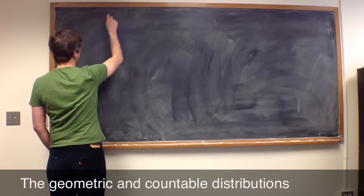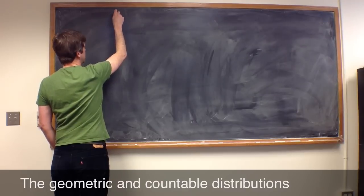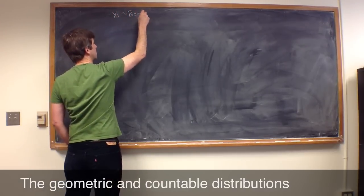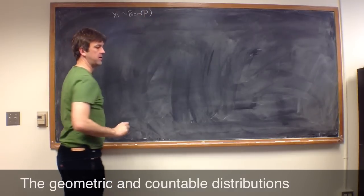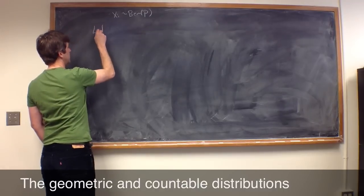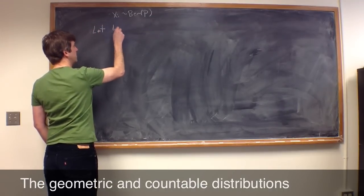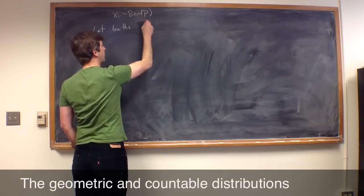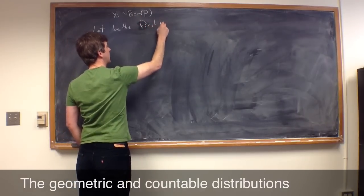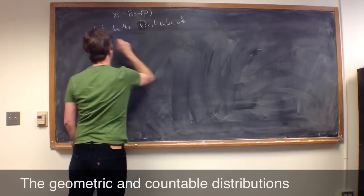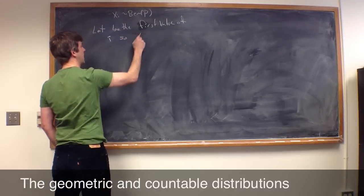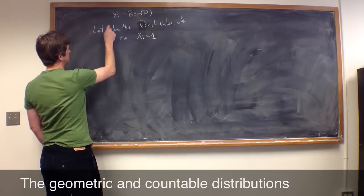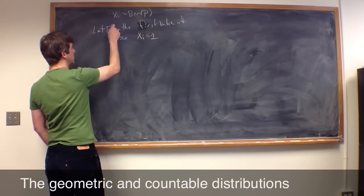So let's say we have a sequence of Bernoulli trials. If we let xi be Bernoulli with probability p, and let t be the value, the first value of i, such that xi equals 1.